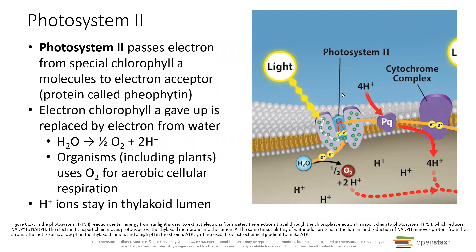The first complex that light hits is called photosystem two. I know - it's the first and it's photosystem two. It was discovered second; photosystem one was discovered first, even though in this chain it comes second. The names aren't always perfect. Photosystem two passes the electron from chlorophyll to an electron acceptor - in this case it's called pheophytin, represented by PQ here. The PQ carries the electron and transports it to another protein complex.